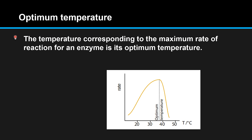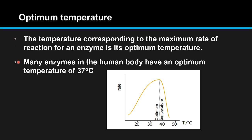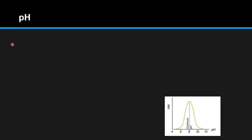The temperature corresponding to the maximum rate of reaction for an enzyme is its optimum temperature. Many enzymes in the human body have an optimum temperature of 37 degrees C.